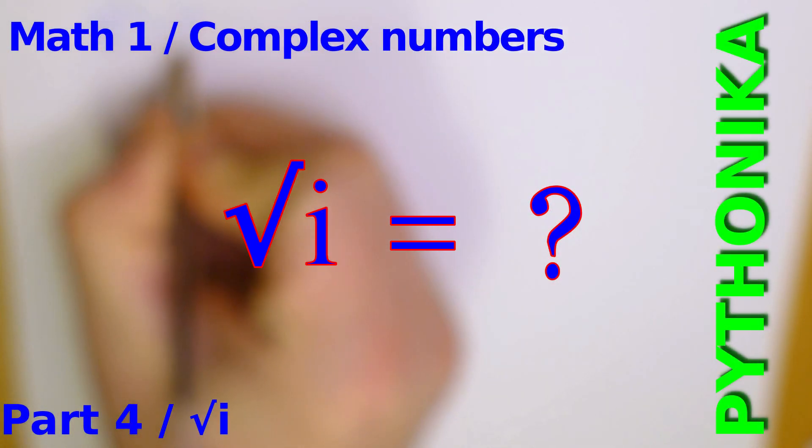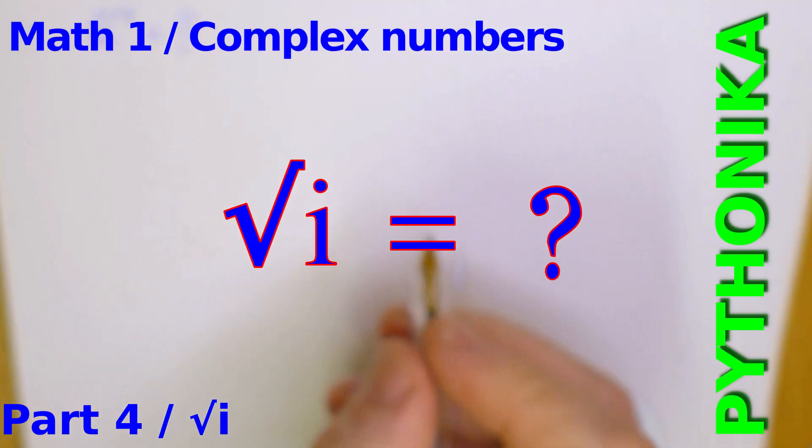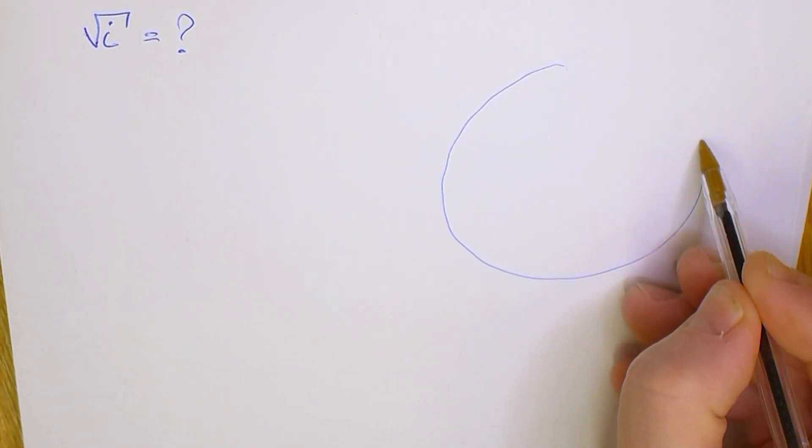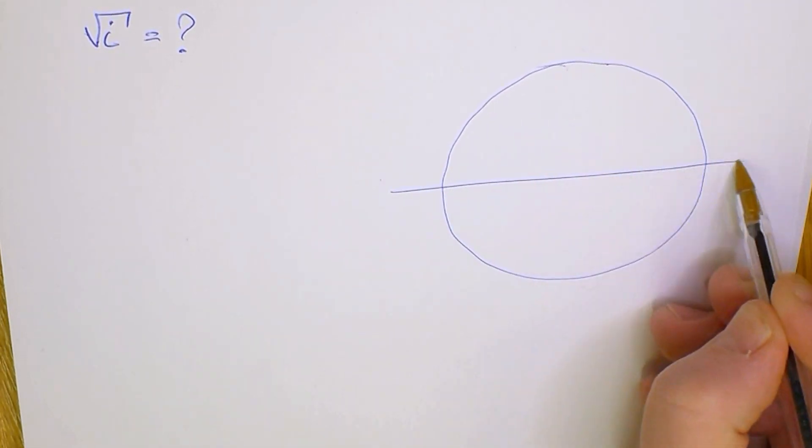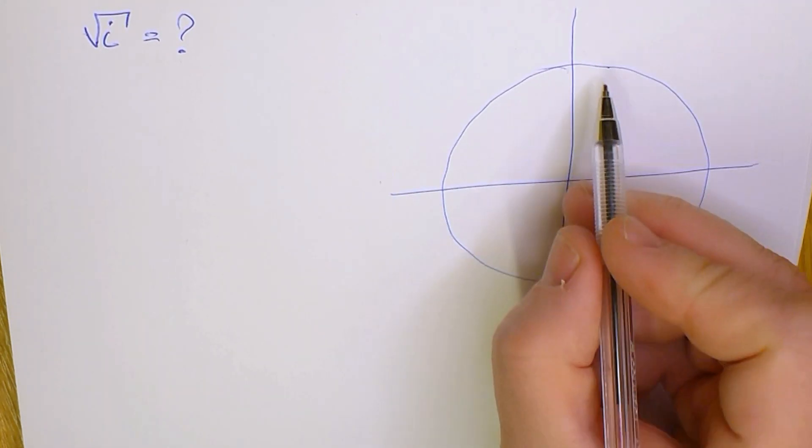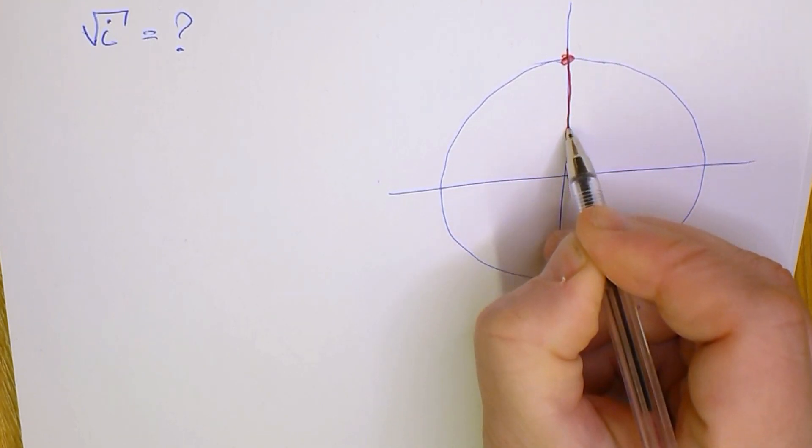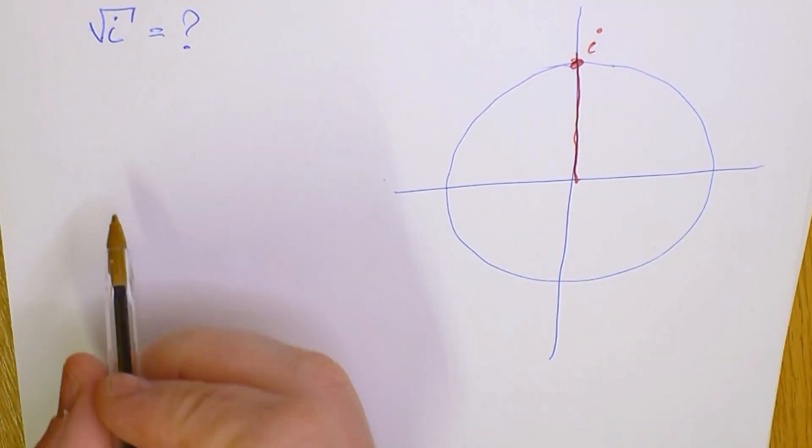In this video, I'll show you how to find the square root of i. This is a pretty straightforward task. First, let's remember what i is on the imaginary and real coordinate space. This is i and its angle is pi over 2.